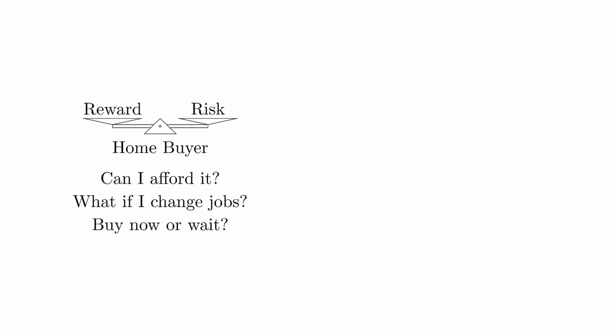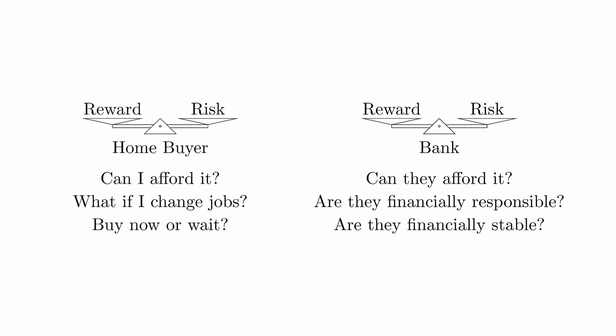There are lots of reasons people buy homes, and each home buyer will need to weigh the risks and rewards of home ownership. At the same time, the bank also needs to weigh the risks and rewards of allowing someone to borrow a large amount of money from them in order to buy the home. If someone has shown themselves to be irresponsible with money in the past, such as carrying large amounts of credit card debt and not being able to pay them off, the bank will think twice about loaning them money.